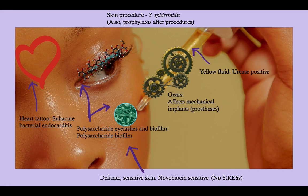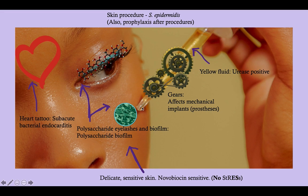Finally, we've got these gears here — kind of out of place, but they're gears on the syringe. These represent mechanical implants: mechanical gears, mechanical implants, prostheses — namely hip replacements and things like that.